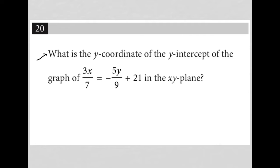So this question says, what is the y-coordinate of the y-intercept of the graph of 3x over 7 equals negative 5y over 9 plus 21 in the xy-plane?